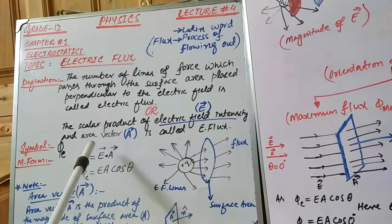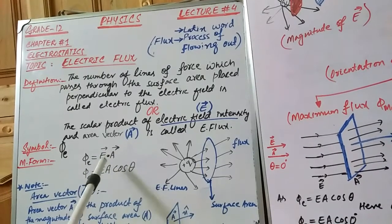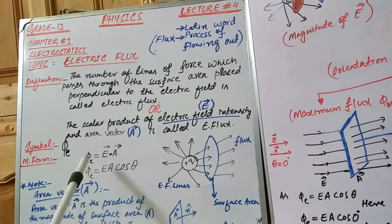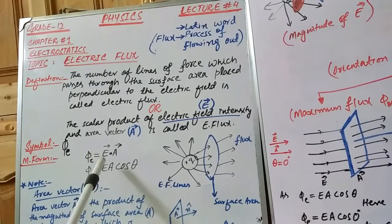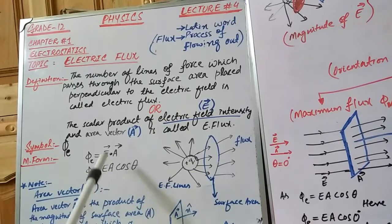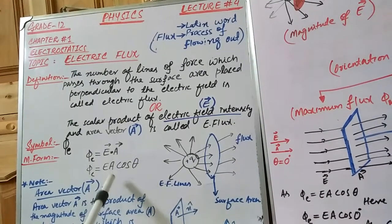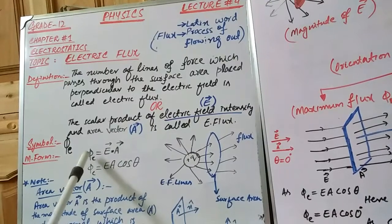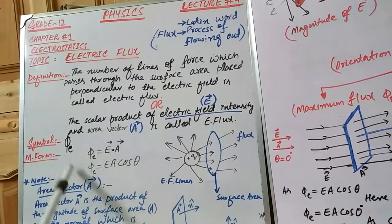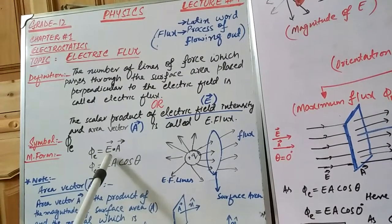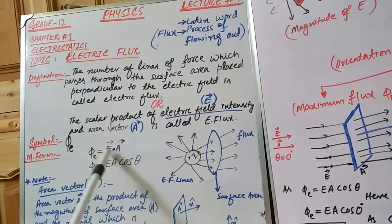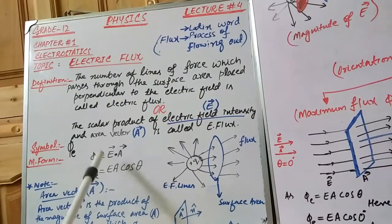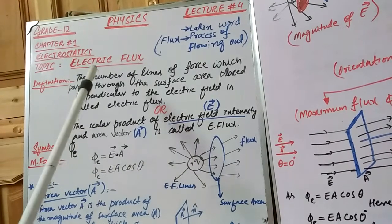As physics students you know there are two types of products used in physics: scalar product (dot product) and vector product (cross product), as covered in chapter two of your first year physics book. Electric flux is an example of dot product. When the product of two vectors gives a scalar, it is called scalar or dot product; when it gives a vector, it is called vector or cross product. For cross product you can consider the example of torque, and for dot product you can consider the example of electric flux.